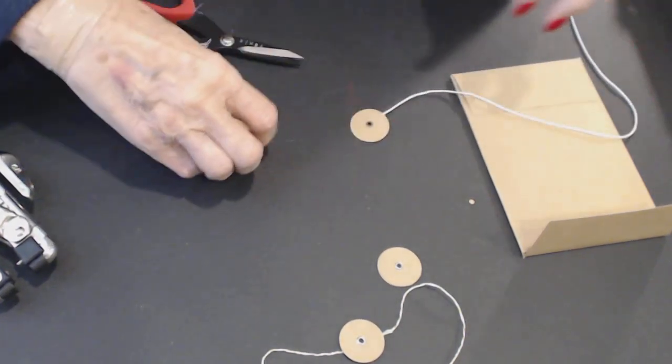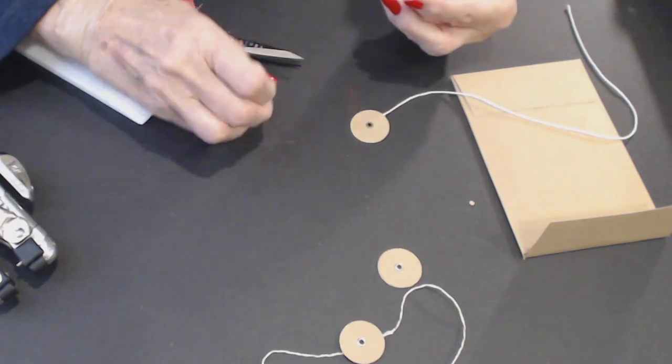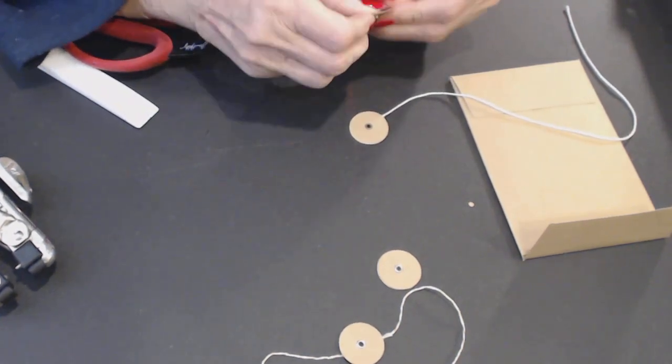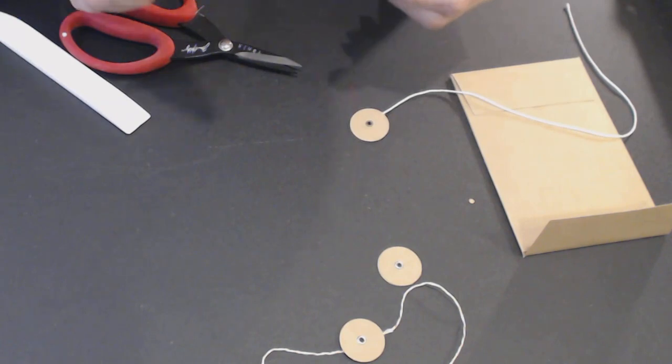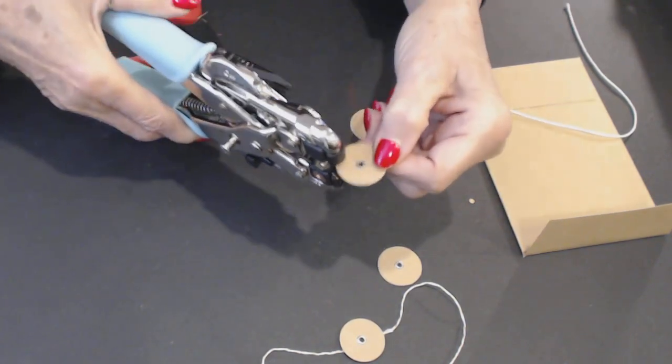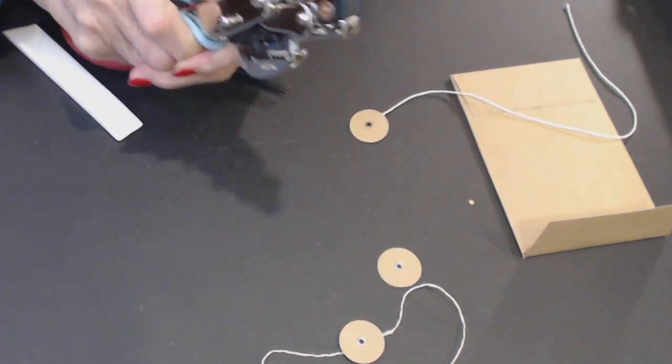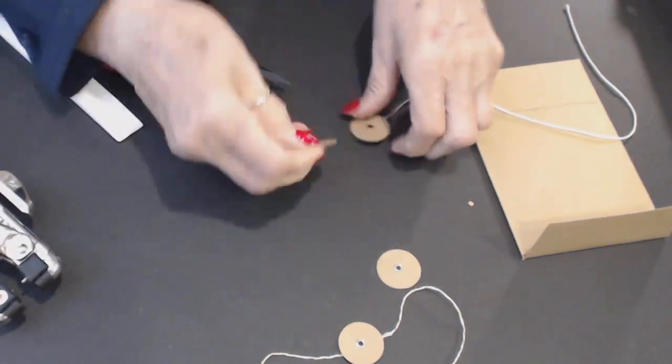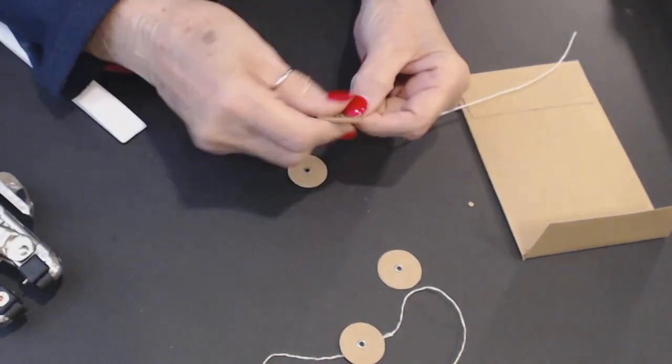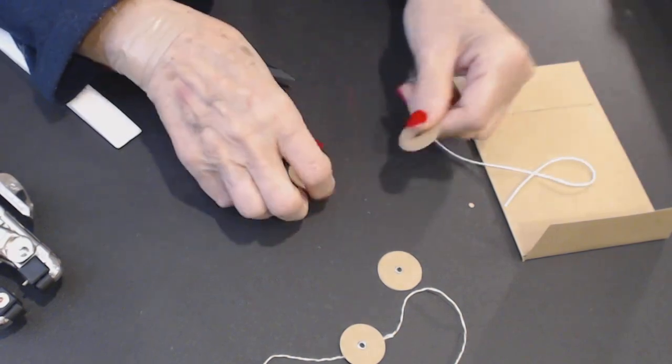Then I'm going to trim off the extra string on the back of the button. Then I'm going to secure the other button. There's no string in the other grommet. I'm going to set the grommet. So there we have both of our buttons. One with the string and one without the string.